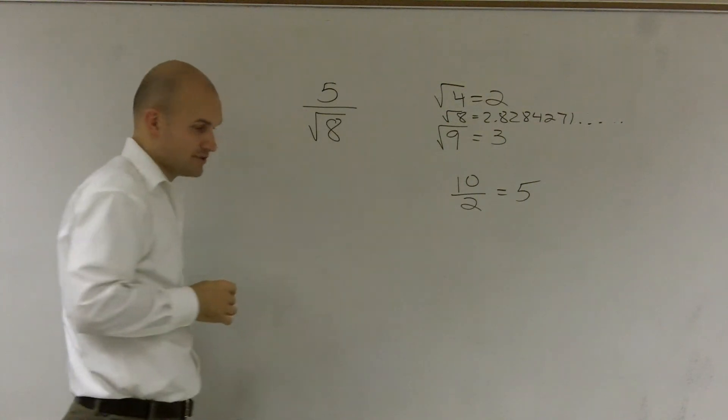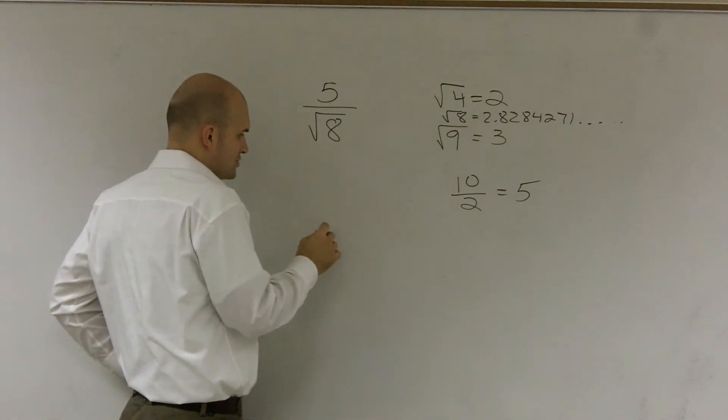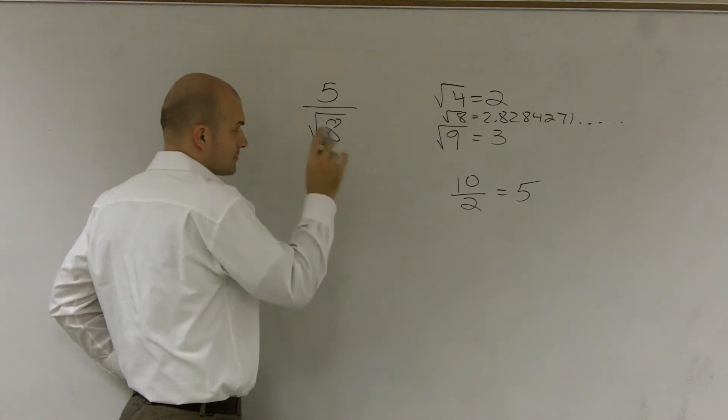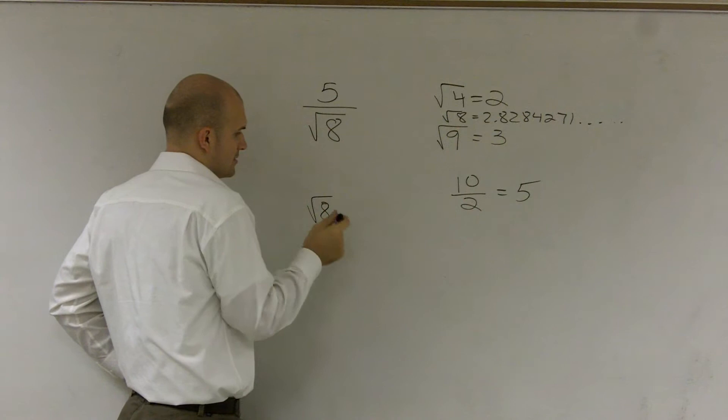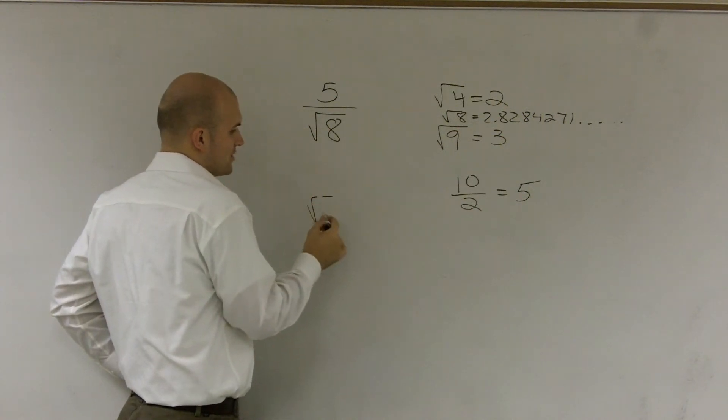Square root of 8 equals 2.8284271, right? And if you guys should know that, let's do square root of 8. Well, first of all, let's do square root of 64.